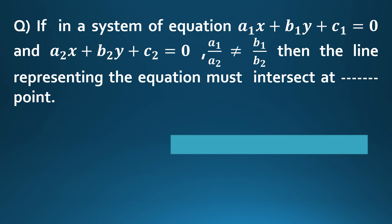The condition is a1/a2 is not equal to b1/b2. The lines representing the equations must intersect at one point. Answer: 1.